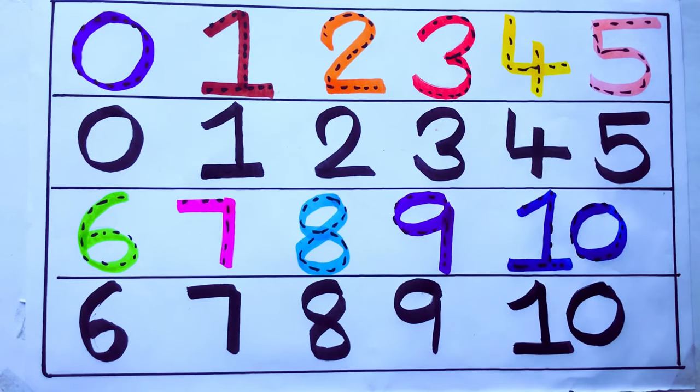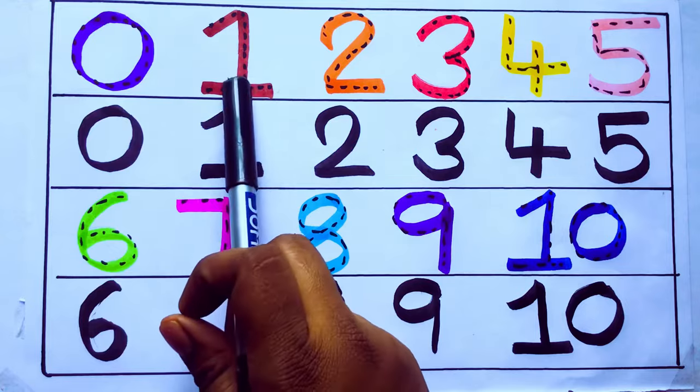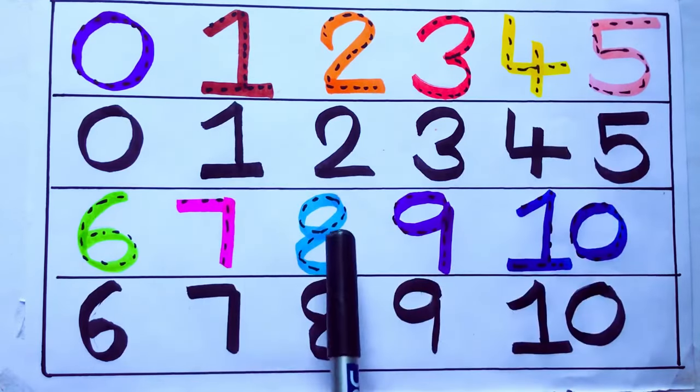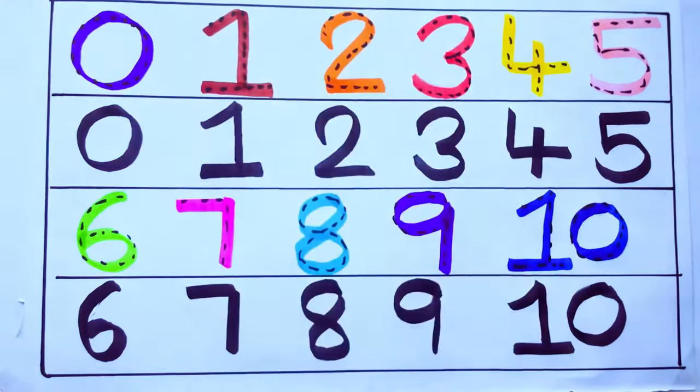Let's review learning numbers: 0, 1, 2, 3, 4, 5, 6, 7, 8, 9, 10. Okay, bye kids.